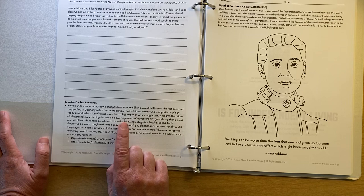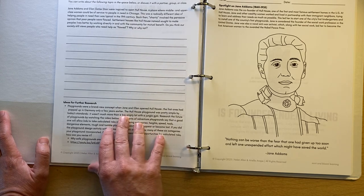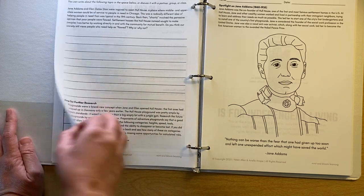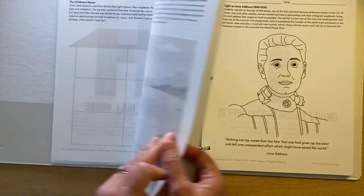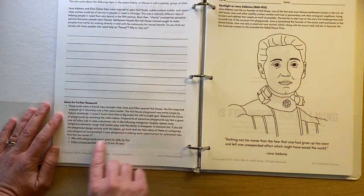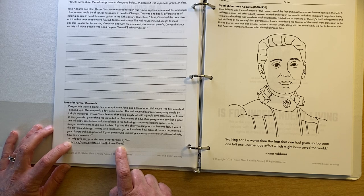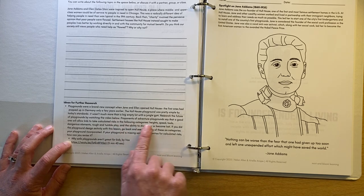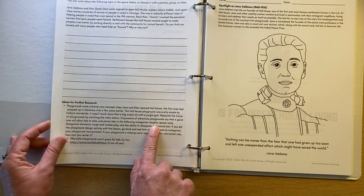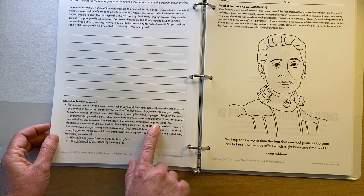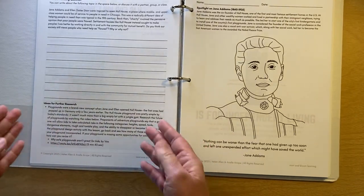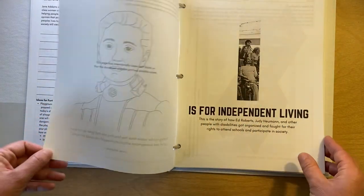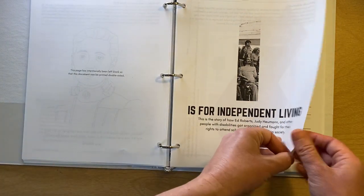I liked this, the ideas for further research for this one is based on the concept of adventure playgrounds. So once kids have done the playground design activity, they could go a little bit deeper and watch a video about why safe playgrounds aren't as good as adventure playgrounds that involve some calculated risks. And they can go through their design and see, did you include ways for kids to take some of these calculated risks? And if not, how can you change your design to make the playground more fun? Okay. And there's our spotlight.